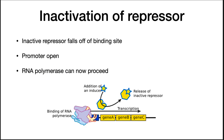If the repressor becomes inactive — which is a reversible event — it falls off its binding site, leaving the promoter open. RNA polymerase can then transcribe the operon.